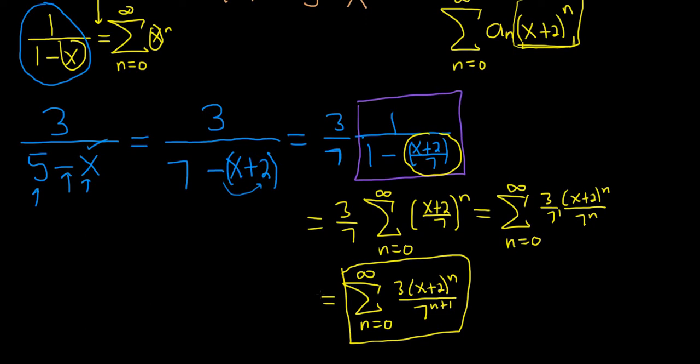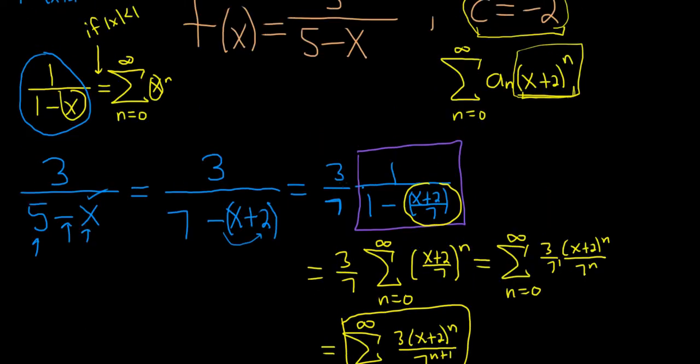So now we still have to find the interval of convergence. To do that, we're going to use this step here, which I've indicated with the star. This step is only true if you look at the original formula, if the absolute value of x is less than 1. So in our case, it's the absolute value of x plus 2 over 7 is less than 1. That's the only time that this holds.